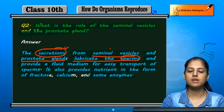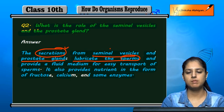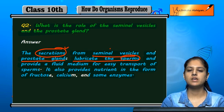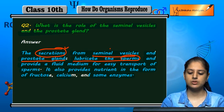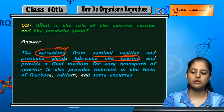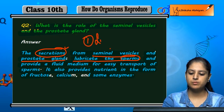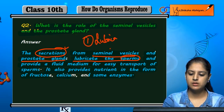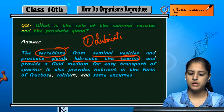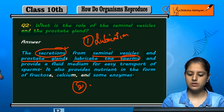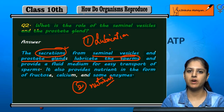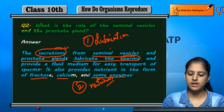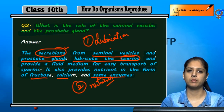So, the first role is to provide lubrication to sperm, and the second role is to provide nutrients in the form of fructose, calcium, and some enzymes.